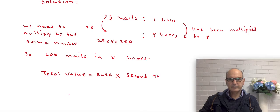So whatever they have given us for second quantity. In this case it was 8. Because they asked us how many mails is delivered in 8 hours.